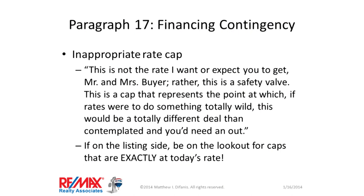Paragraph 17: financing contingency — inappropriate rate caps. Every normal buyer asks about this. If today's rate is 4.5% and you put in 5%, the buyer looks at you wondering why you're trying to screw them over. The suggested dialogue: this is not a rate you want or expect to get — this is a safety valve, a cap representing the point at which rates would have done something totally wild, making this a totally different deal than contemplated and giving you an out. Rates bounce around by a quarter percent easily within a week, sometimes a half percent. Don't put today's rate as the rate cap when writing offers.